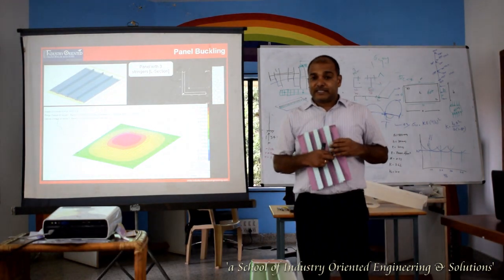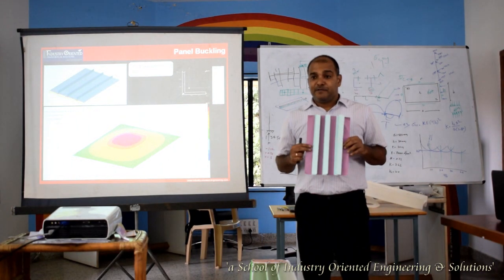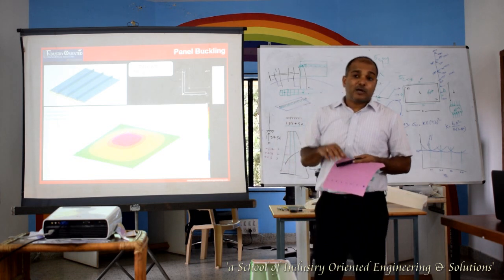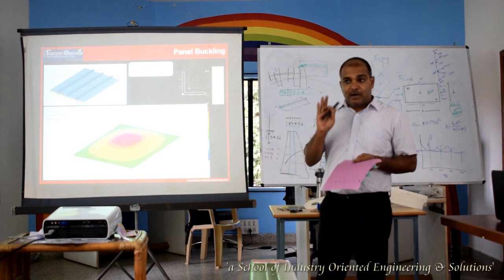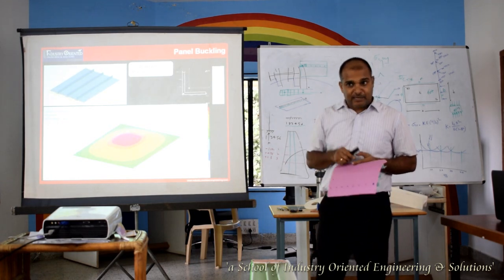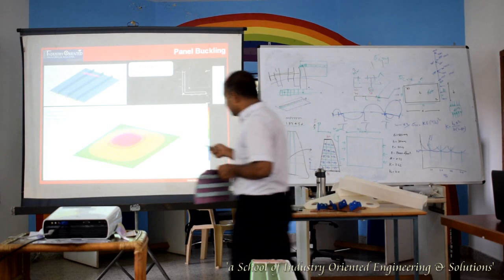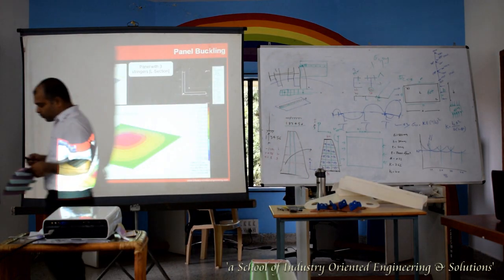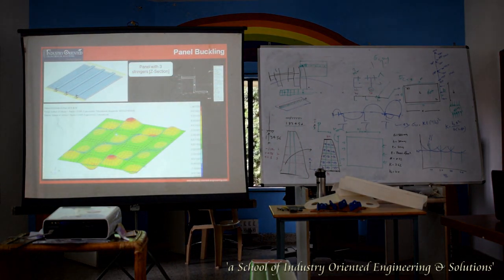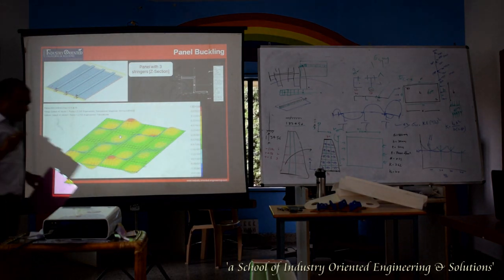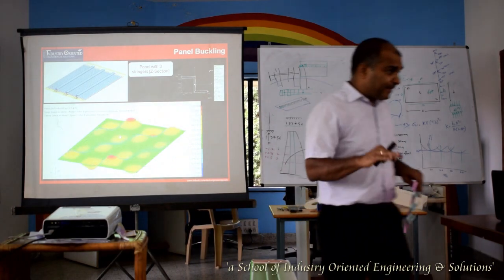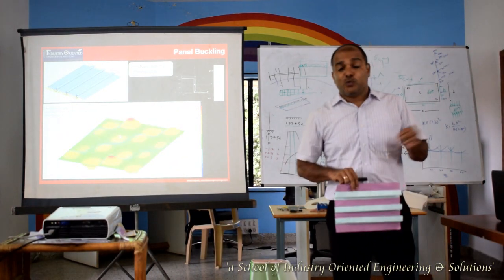Even though it was giving the end stiffness, unfortunately it was not able to break the panel — it buckled in a global mode. A global buckle mode in the first mode is never acceptable. Even in real-time design, that's the reason we took the decision to move from the L section to the G section. This is where we found one issue: 1D is showing clarity, but we are not able to see it in 2D.